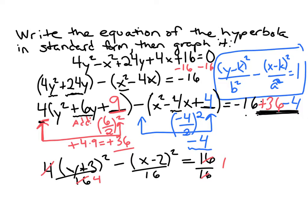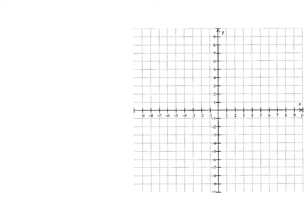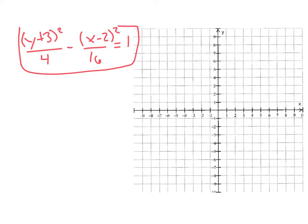And so here is the standard form for the equation of the hyperbola. I'm going to write it on the next page here. Okay so our standard form is (y+3)²/4 - (x-2)²/16 = 1. So there's that part of the problem done. Now we need to graph it.